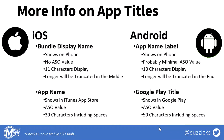An app title in the ASO world references the name of the app as it shows up in the store. There are lots of different kinds of titles in both Android and iOS, but the one that matters for ASO is the one that shows up in the store, so in Google Play or in iTunes.